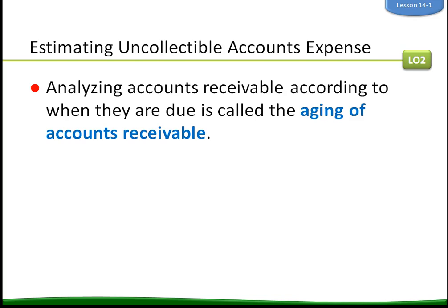When you analyze accounts receivable according to when they are due, this is called aging — aging of accounts receivable. The first step is to put accounts receivable into categories by age groups: everything that's current, due 1 to 30 days, due 31 to 60 days, and so on. We then analyze those age groups, and that is the aging of accounts receivable.